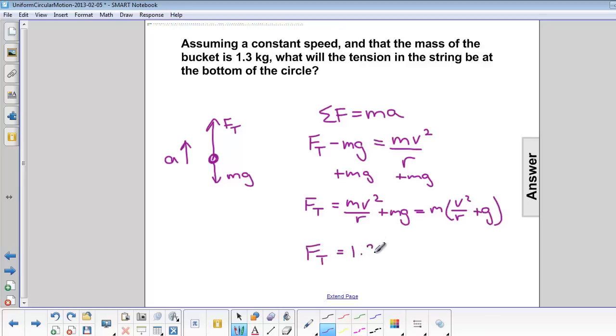m is 1.3 kilograms, v from our last problem is 3.4 meters per second squared, divided by r, also from the last problem, 1.2 meters.